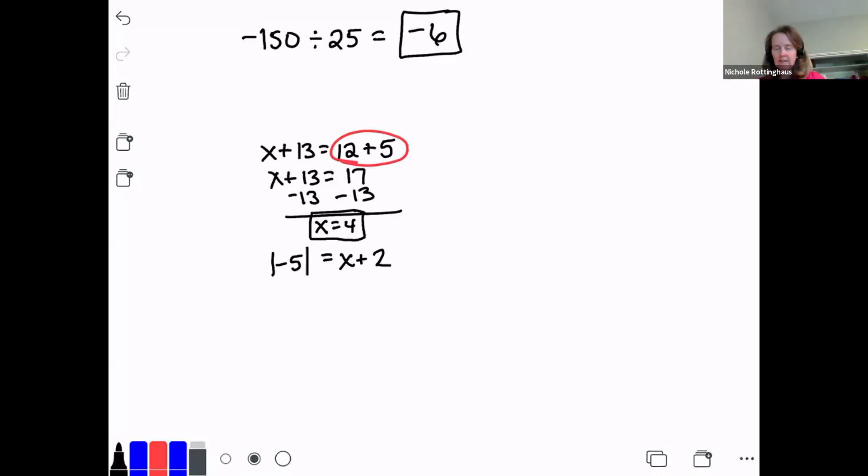And then our last one, again, I have to simplify the absolute value of negative 5 is 5. So 5 equals x plus 2. I'm trying to get x by itself. What's being done to x? I'm adding 2 to x. So to get that by itself, I have to subtract 2 on both sides. So x equals 3.